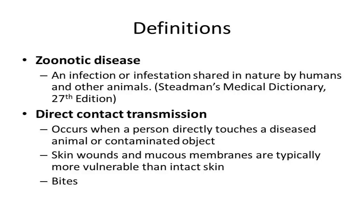Skin wounds, and a person's eyes, nose, and mouth are areas that are typically more vulnerable than intact skin, as places where organisms spread by direct transmission can enter the body. Animal bites are another common way disease can be spread by direct contact.